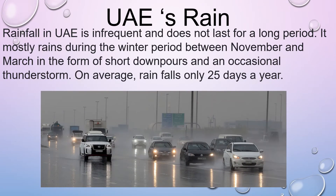UAE's rain: Rainfall in UAE is infrequent and does not last for a long period. It mostly rains during the winter period between November and March in the form of short downpours and occasional thunderstorms. On average, rain falls only 25 days a year.